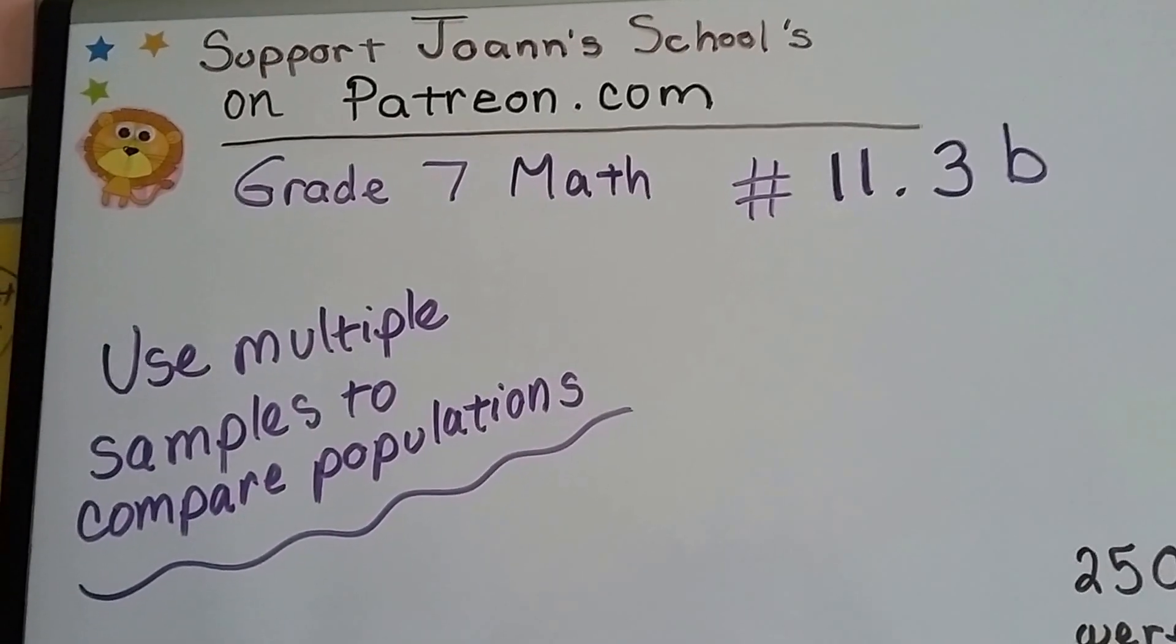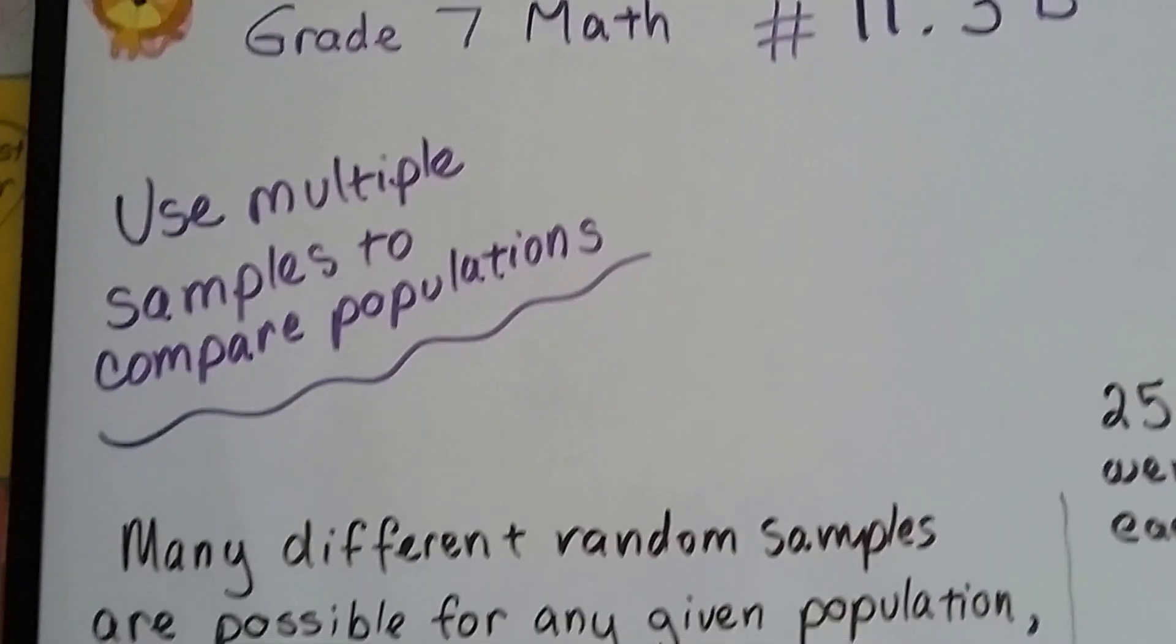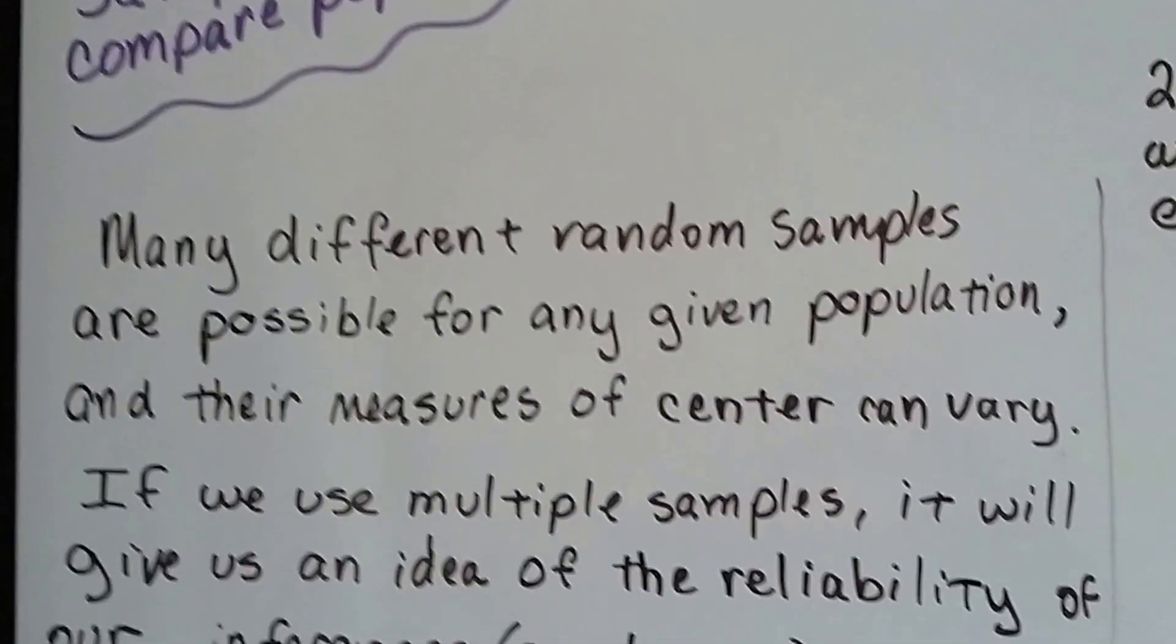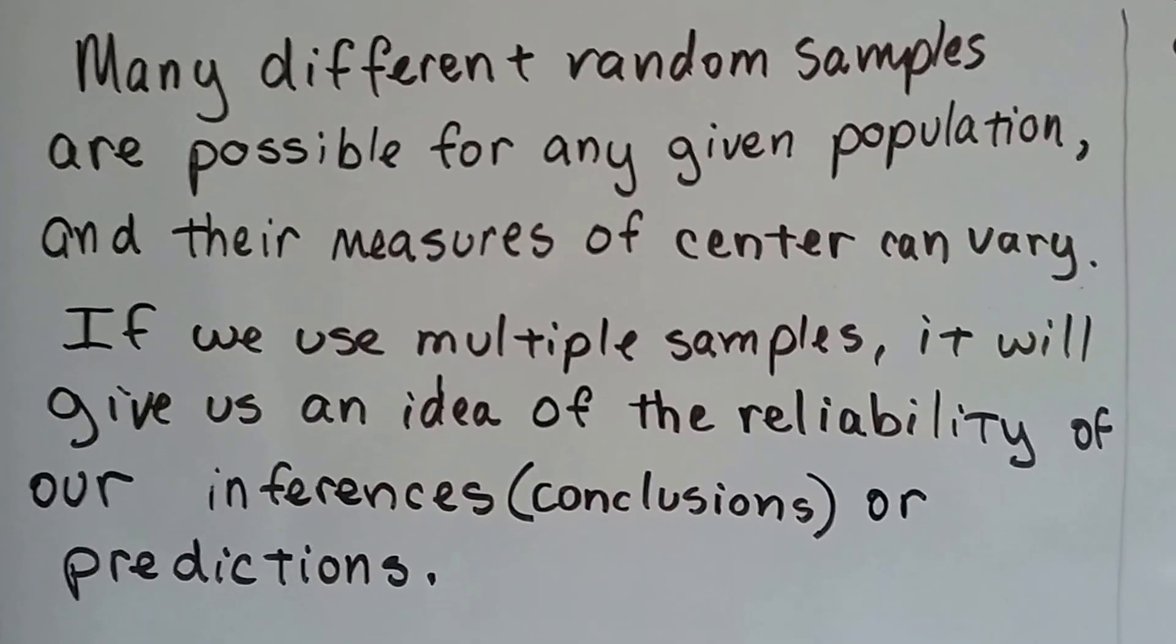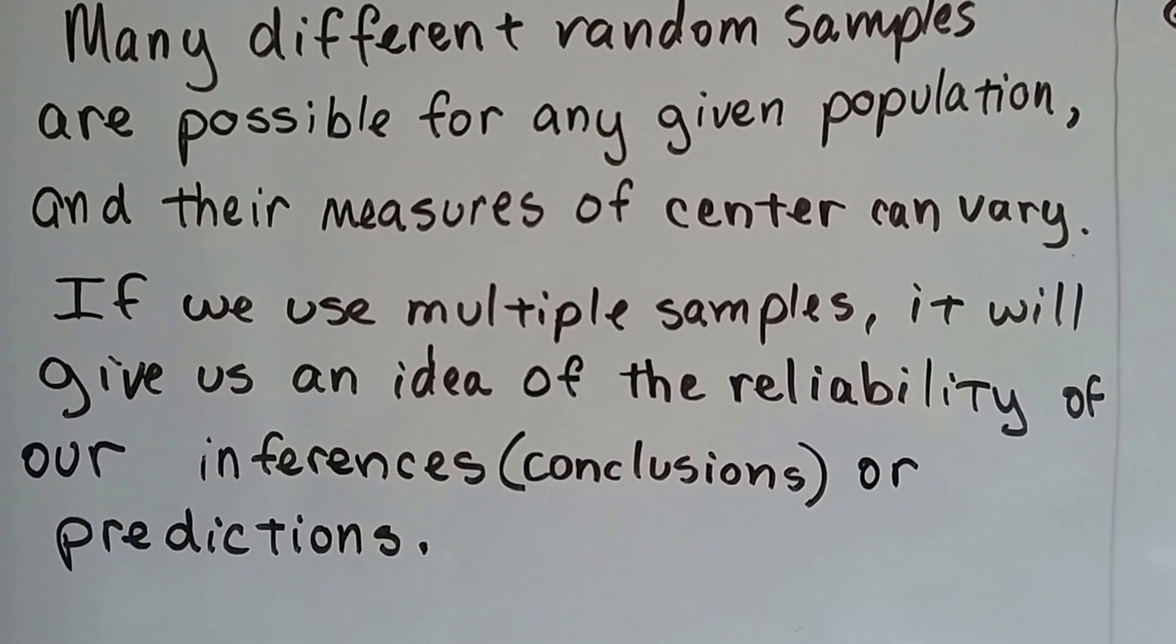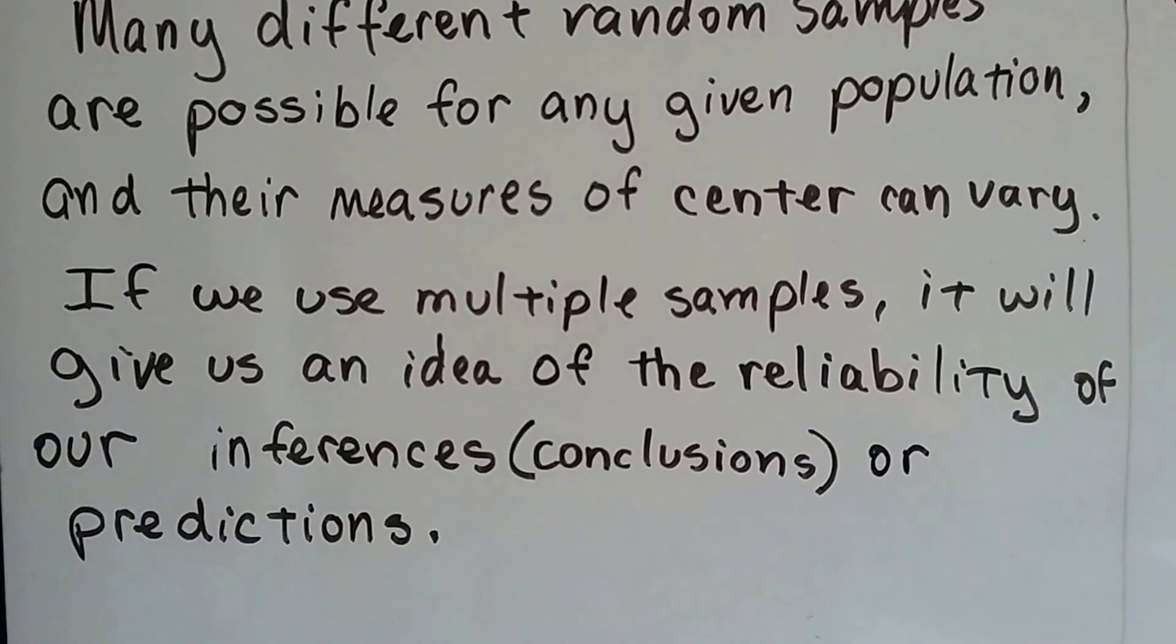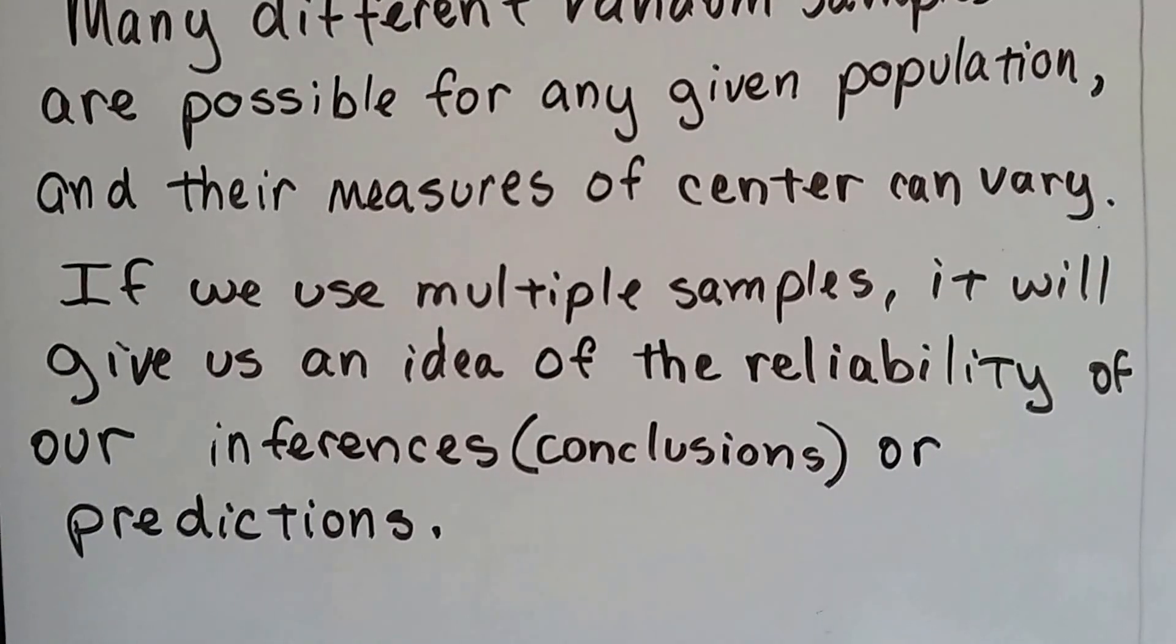Grade 7 math, number 11.3b: use multiple samples to compare populations. Many different random samples are possible for any given population, and their measures of center can vary. If we use multiple samples, it'll give us an idea of the reliability of our inferences, those are our conclusions, or our predictions.